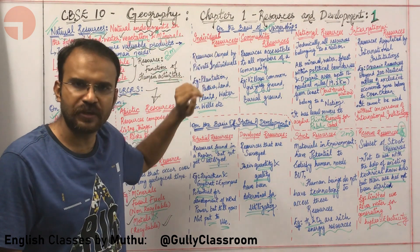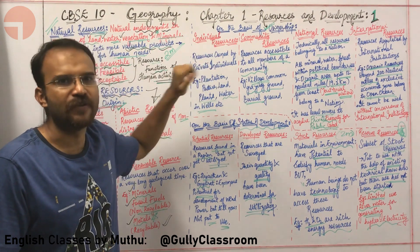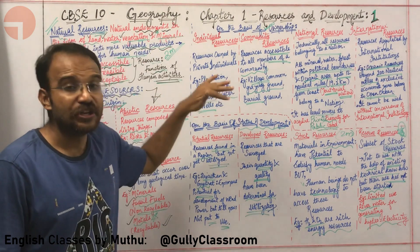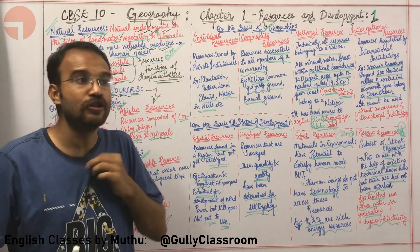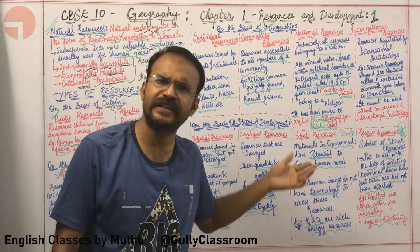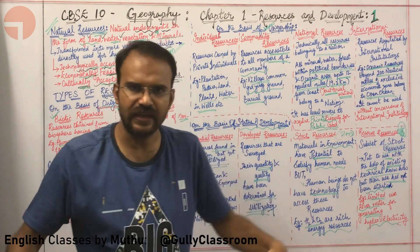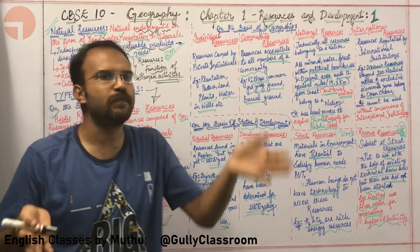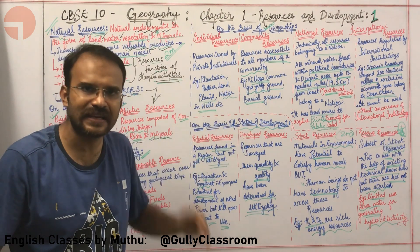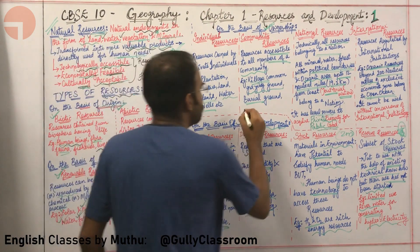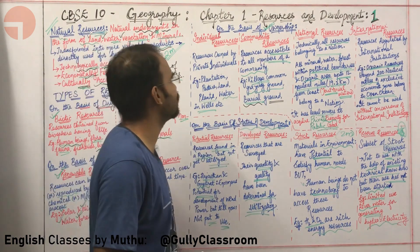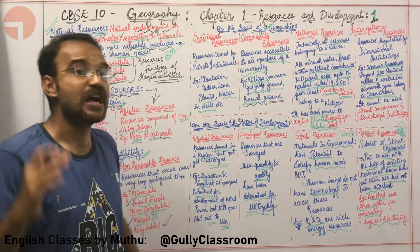Individual resources are owned by individuals — for example, farmlands and pasture lands. Community resources are resources that can be used by a particular community. For example, community grazing lands in villages where all people bring their cattle to graze, and burial grounds where people bury their dead — these are classified as community resources.